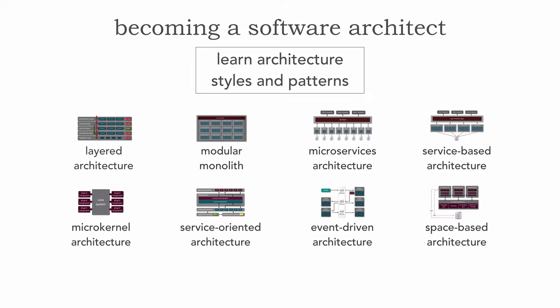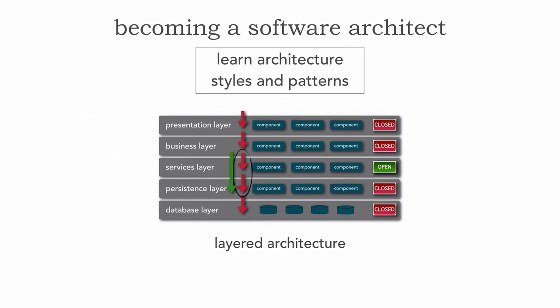I'm going to go over all eight of the most common architecture styles very briefly, but I really encourage you to stay tuned towards the end of this video because I'm going to show very specific resources on how to gain more information about all these different architecture styles. The first one is layered architecture, also called the de facto standard architecture. This is a very traditional architecture style, usually a monolith, that we have been developing for at least six decades, where we basically separate things into layers — a very natural way of creating software — and this is what's called a technically partitioned architecture.